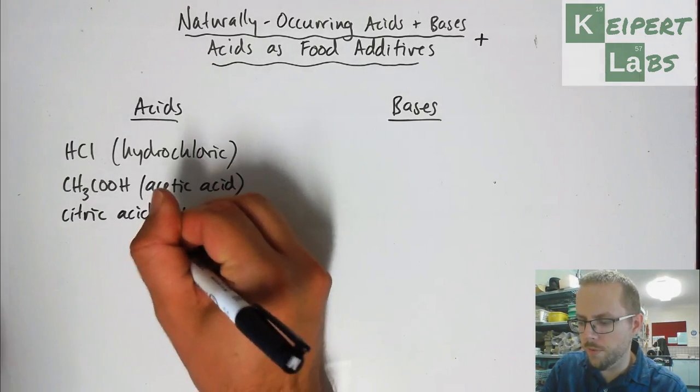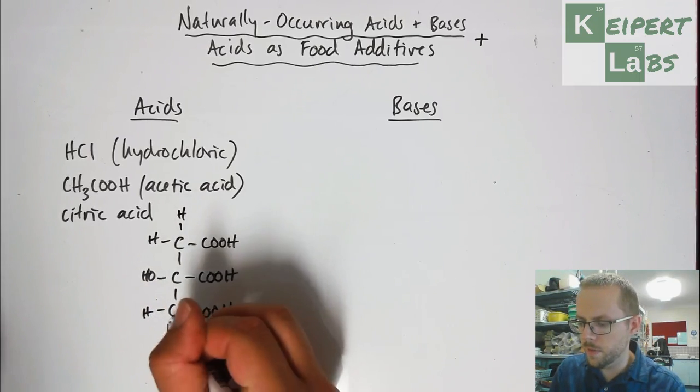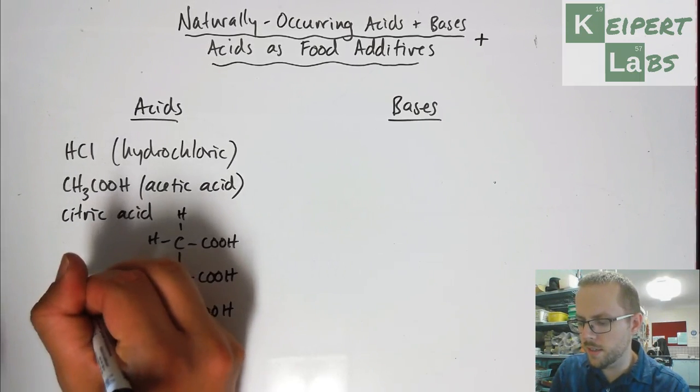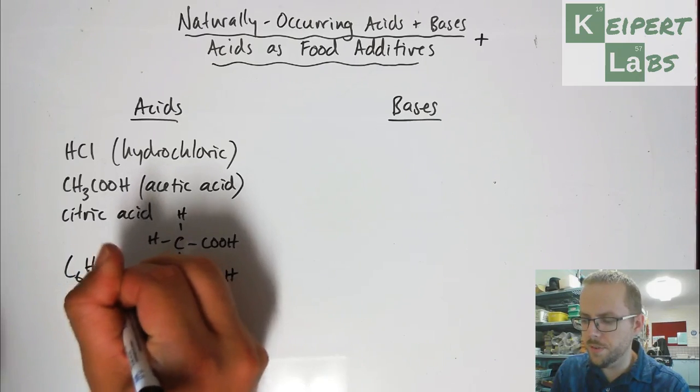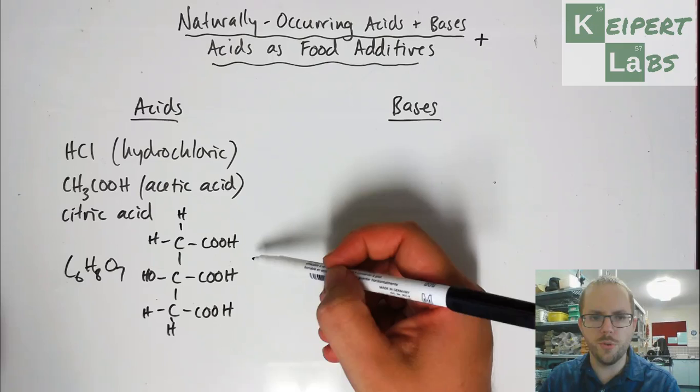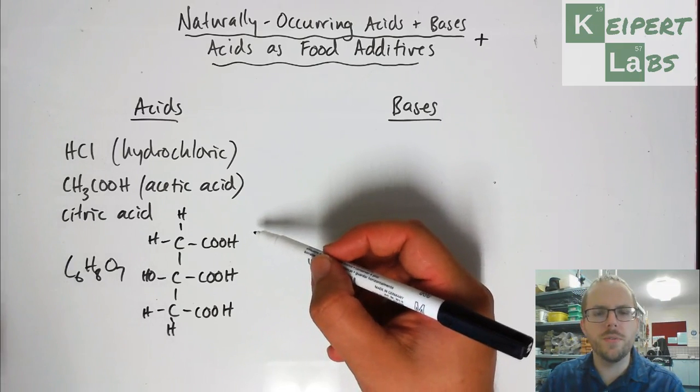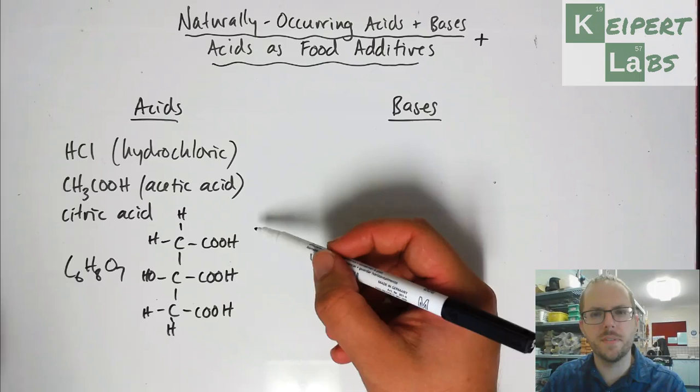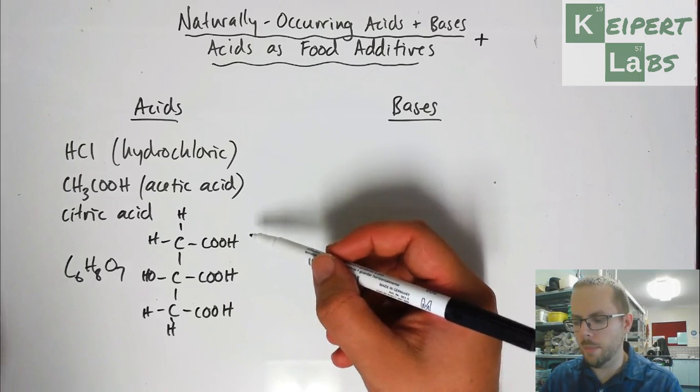And then we have, we fill up the remaining spaces with hydrogens. So it's C6H8O7. And you need to be familiar with this structure to be able to draw it. So it's present in a lot of citrus fruit. So it's what's responsible for the tartness of things like lemons and grapefruit and oranges.